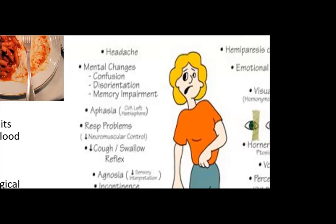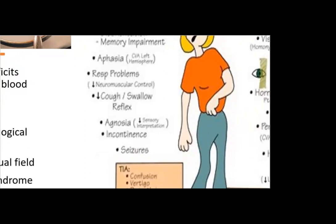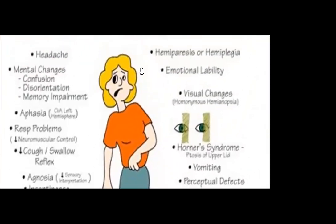Other symptoms include agnosia — decreased sensory interpretation — bladder or bowel incontinence, and these clients are at high risk for seizures. We can also see hemiplegia, which is one-sided paralysis.